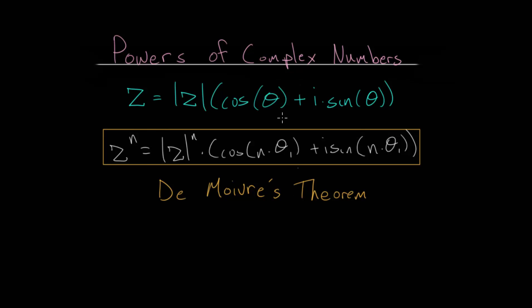In a previous video, we looked at writing a complex number z in its polar form where we have the magnitude, or the absolute value of the complex number, multiplied by its direction where theta is measured relative to the positive real number axis.